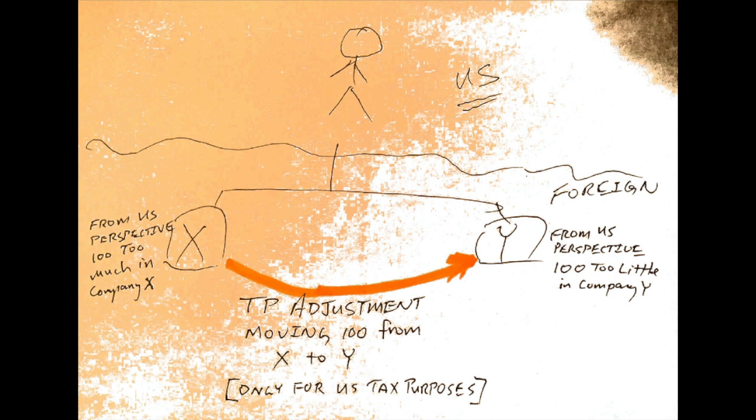So the point is that accounting and transfer pricing adjustments have to be in sync. So if there's a mismatch, how do we correct it in a tax sense?